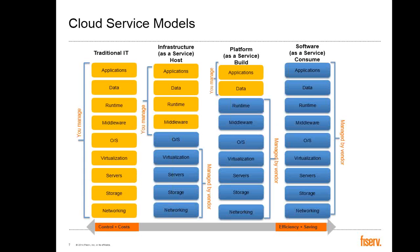Comparing these three models with traditional IT — in traditional IT, the enterprise in-house IT department manages everything: servers, virtualization, OS, middleware, data, and applications. In Infrastructure as a Service, the vendor — the cloud provider — provides the network, storage, server, OS, and virtualization. As a consumer or business, you manage your own application, data, runtime, and middleware.